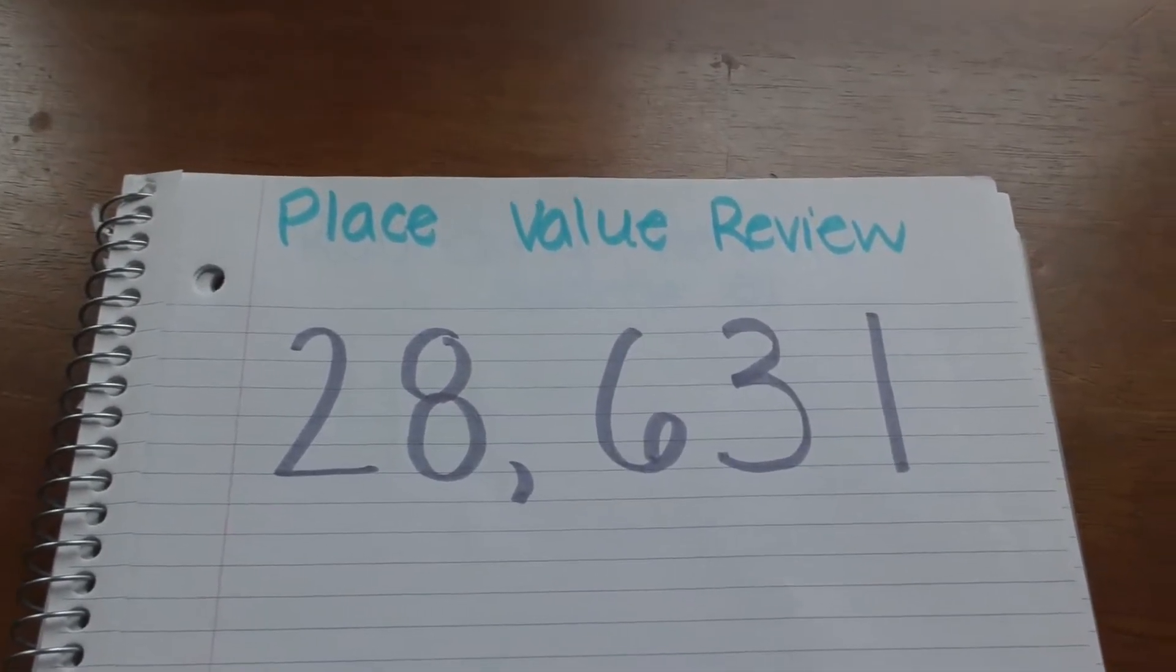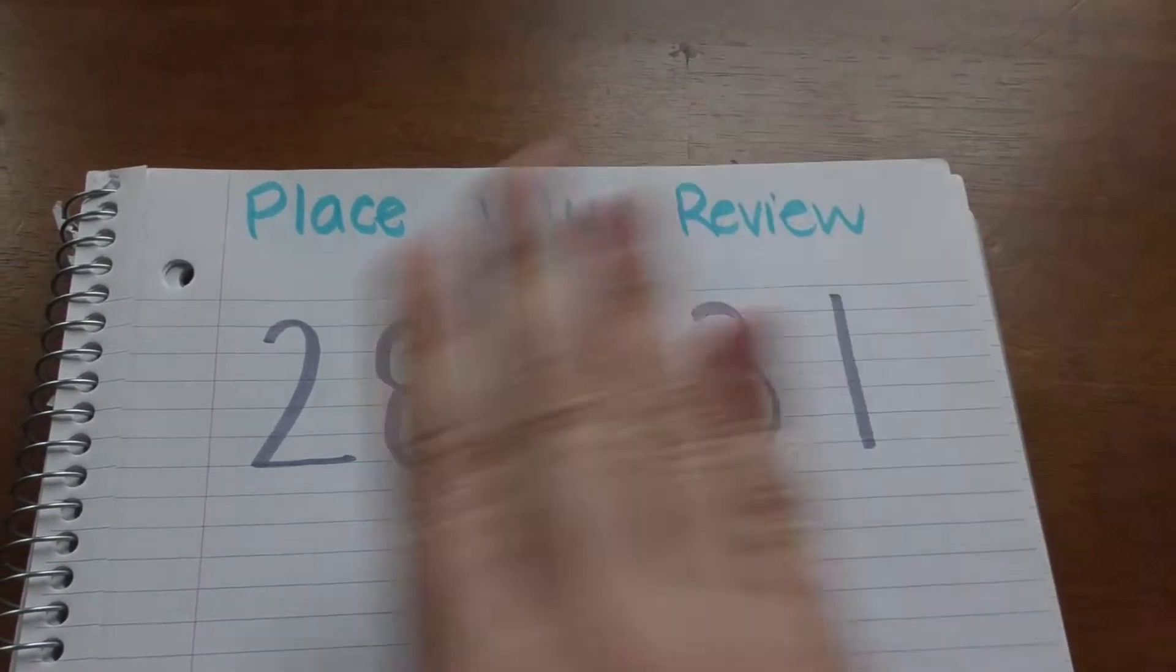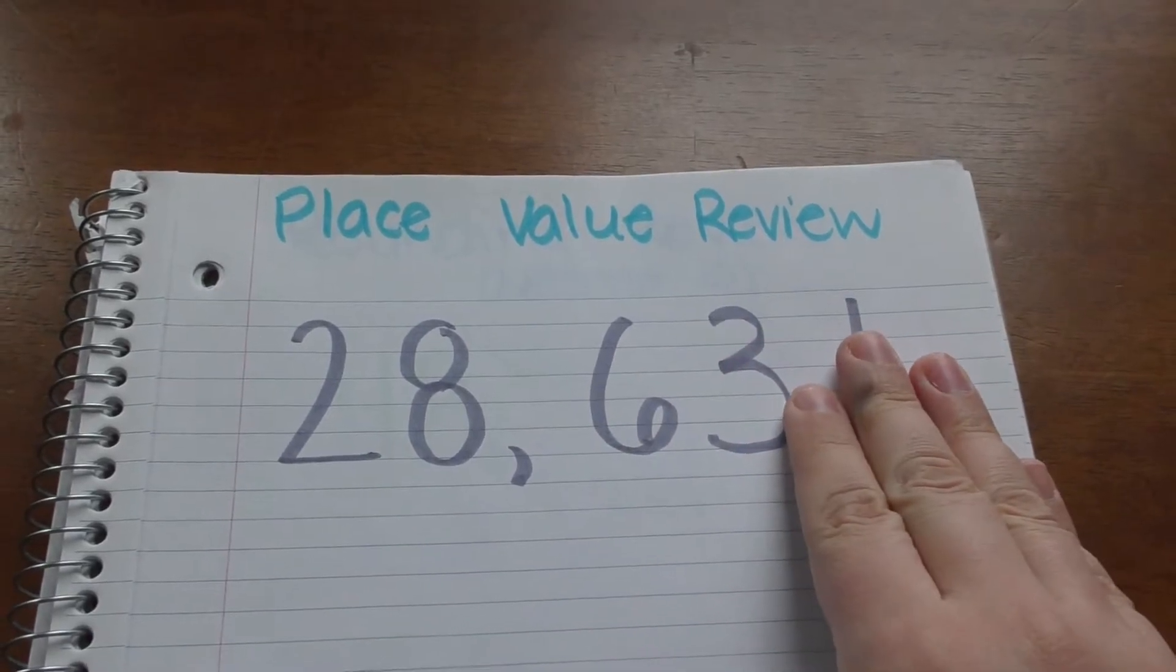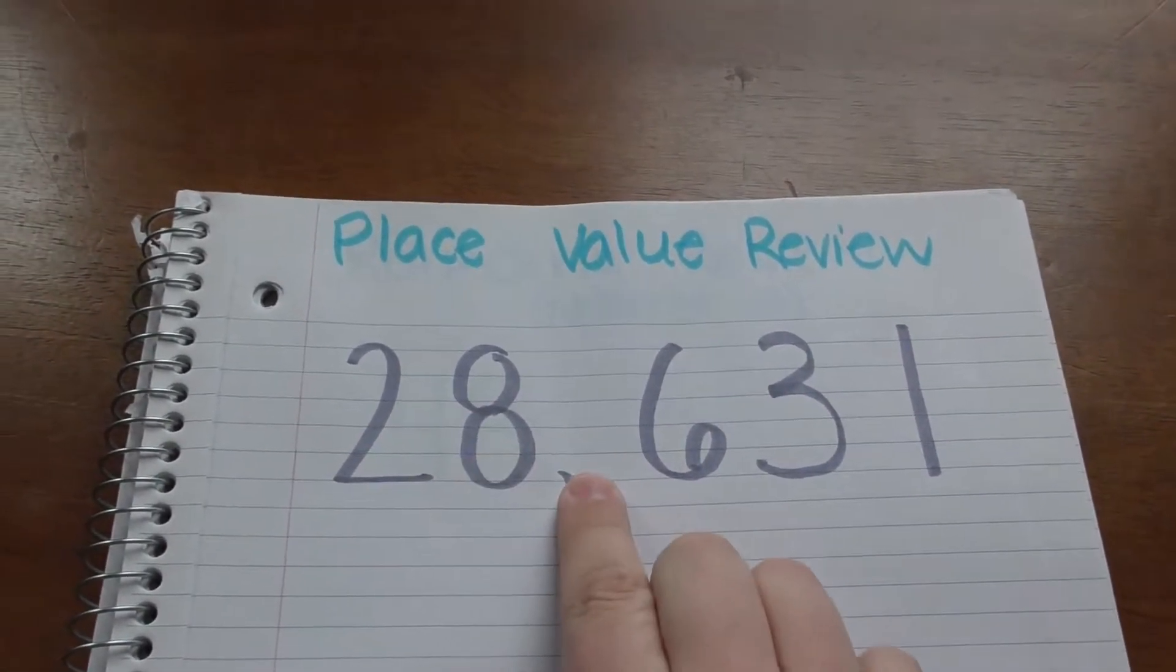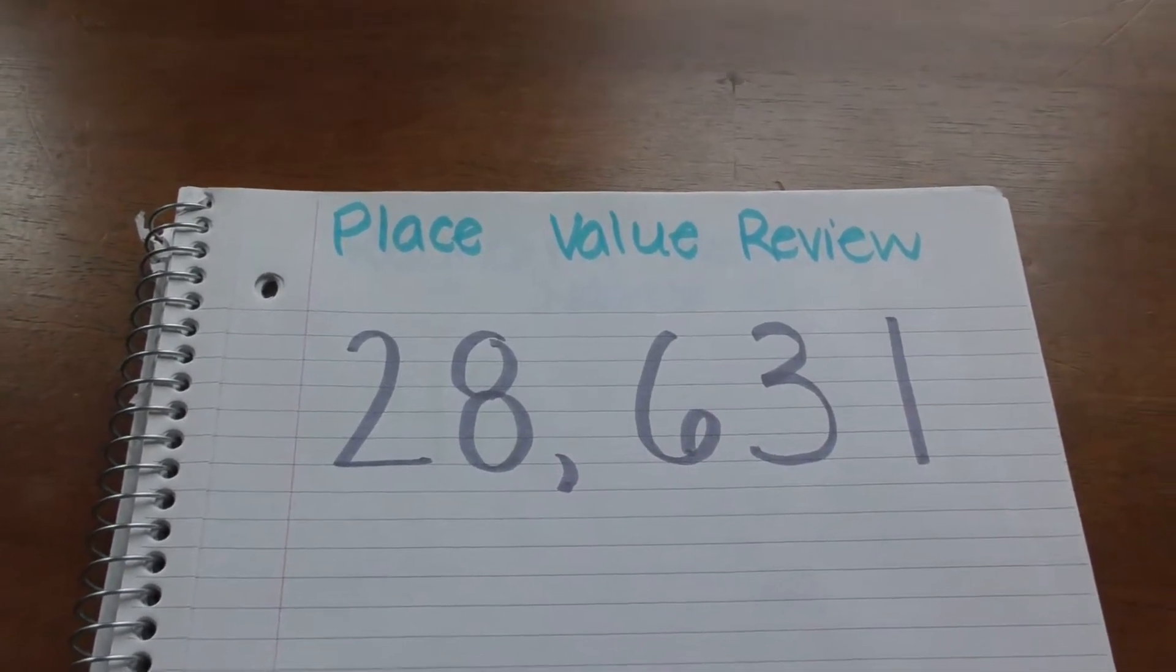Today we are gonna do a little place value review. So each of these numbers stand for a different place value. This whole number is 28,631.